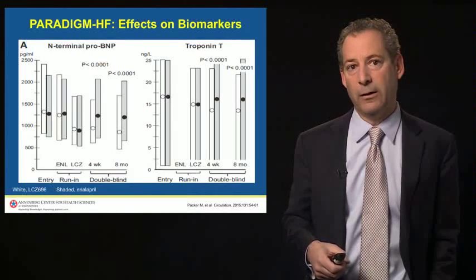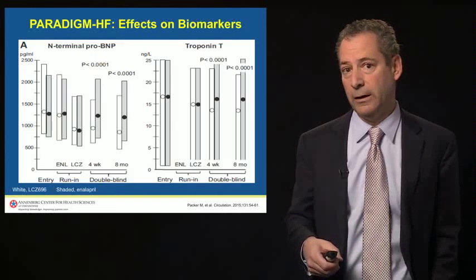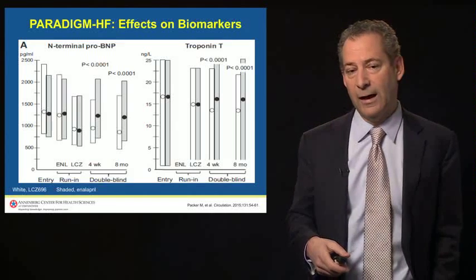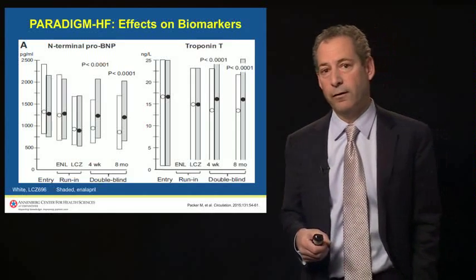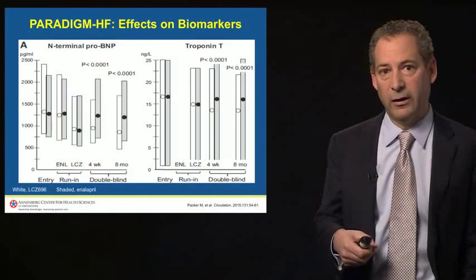LCZ-696 works by blocking the AT1 receptor and by inhibiting neprilysin, which is responsible for the breakdown of biologically active natriuretic peptides. When you give this drug, BNP will actually go up slightly, and we think that may be one of the mechanisms by which the drug works. However, NT-proBNP — N-terminal proBNP — is not a substrate for neprilysin, and is still a very good measure of the severity of heart failure even in the setting of neprilysin inhibition.